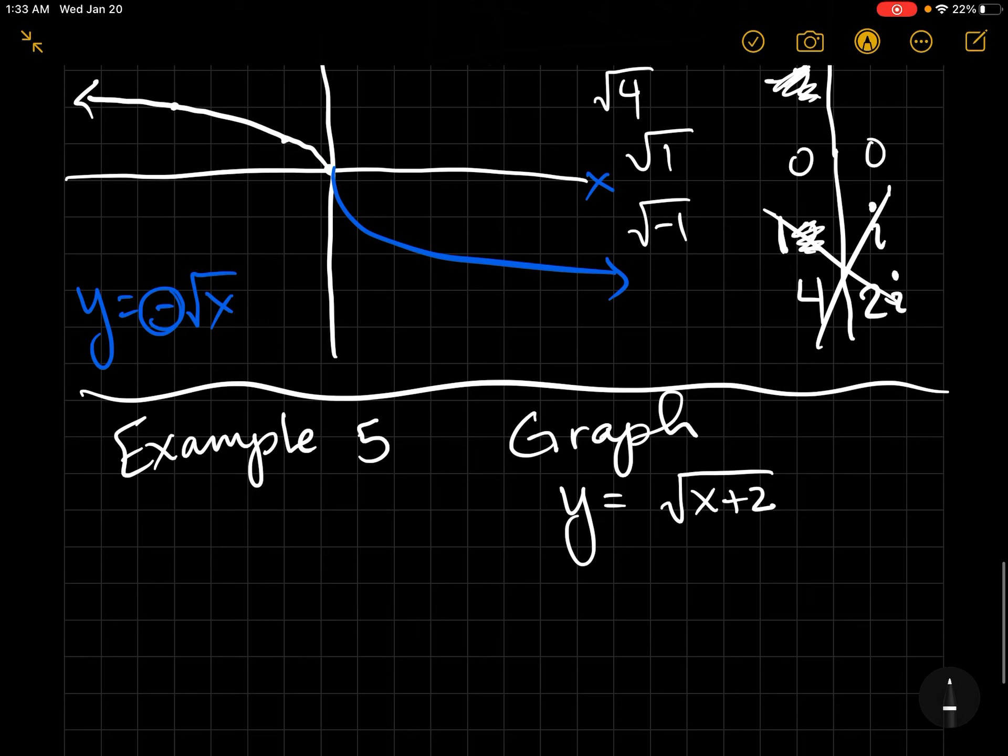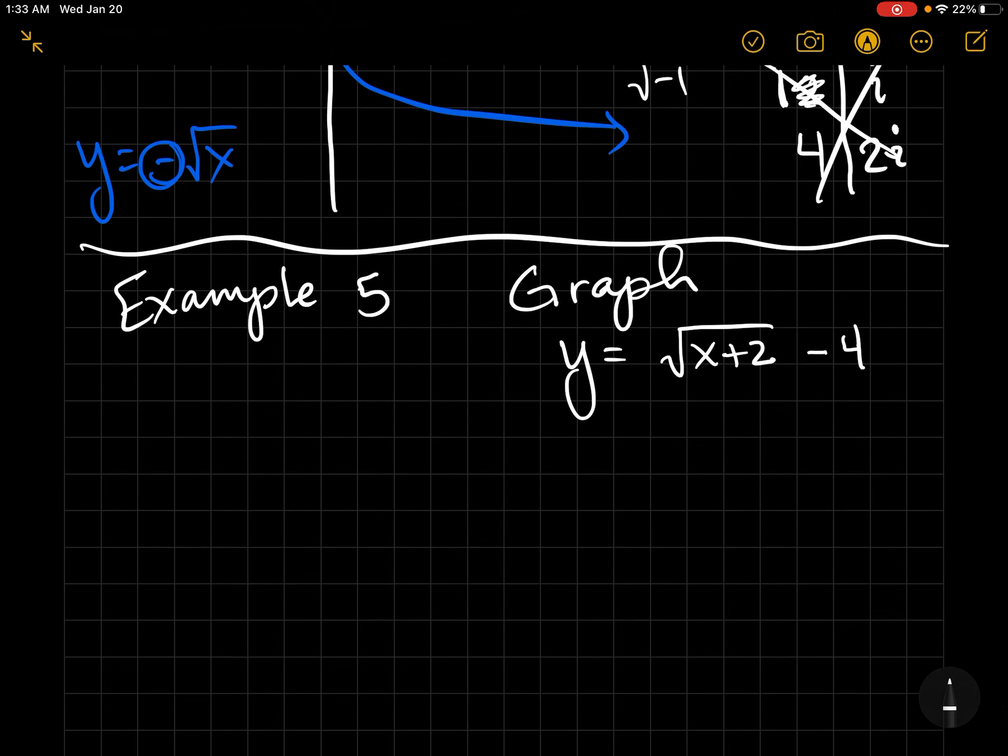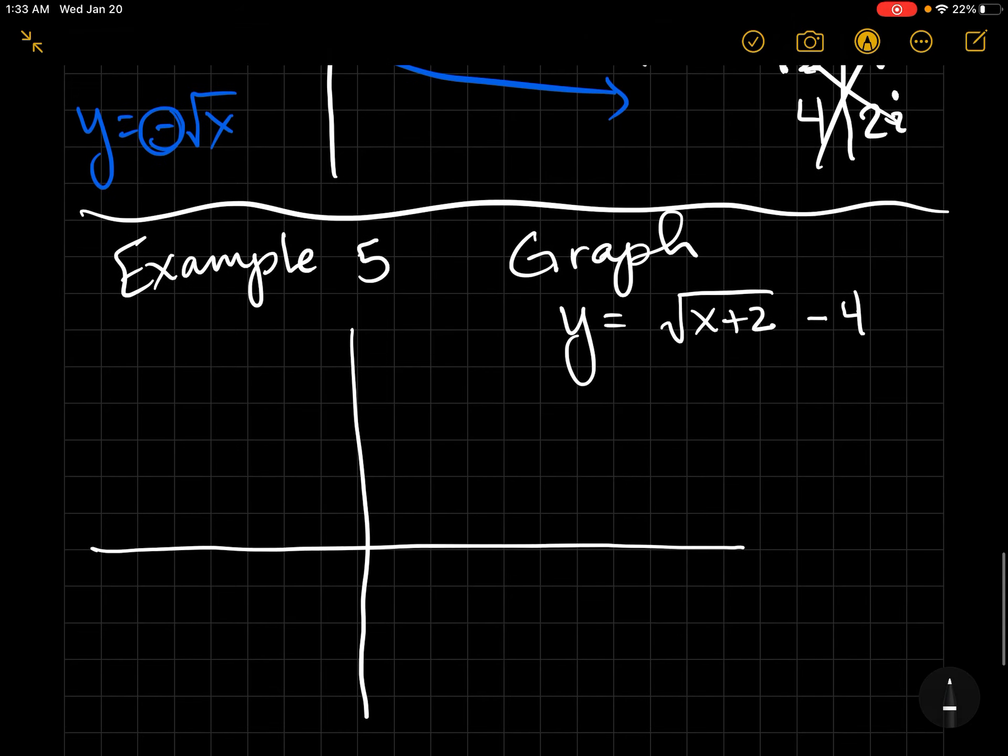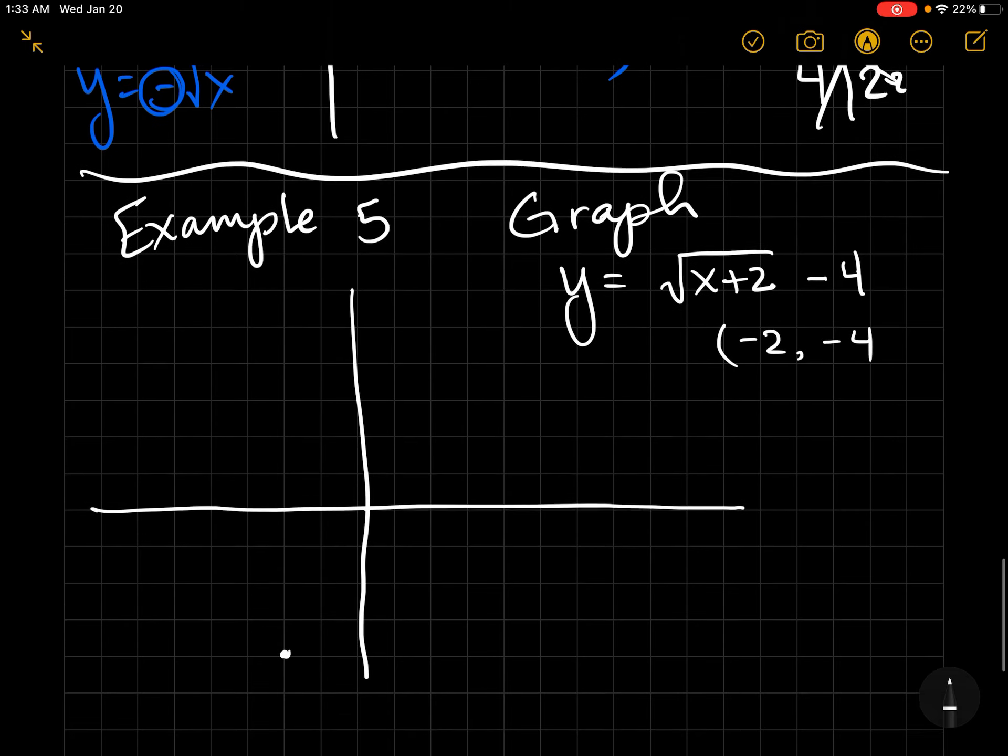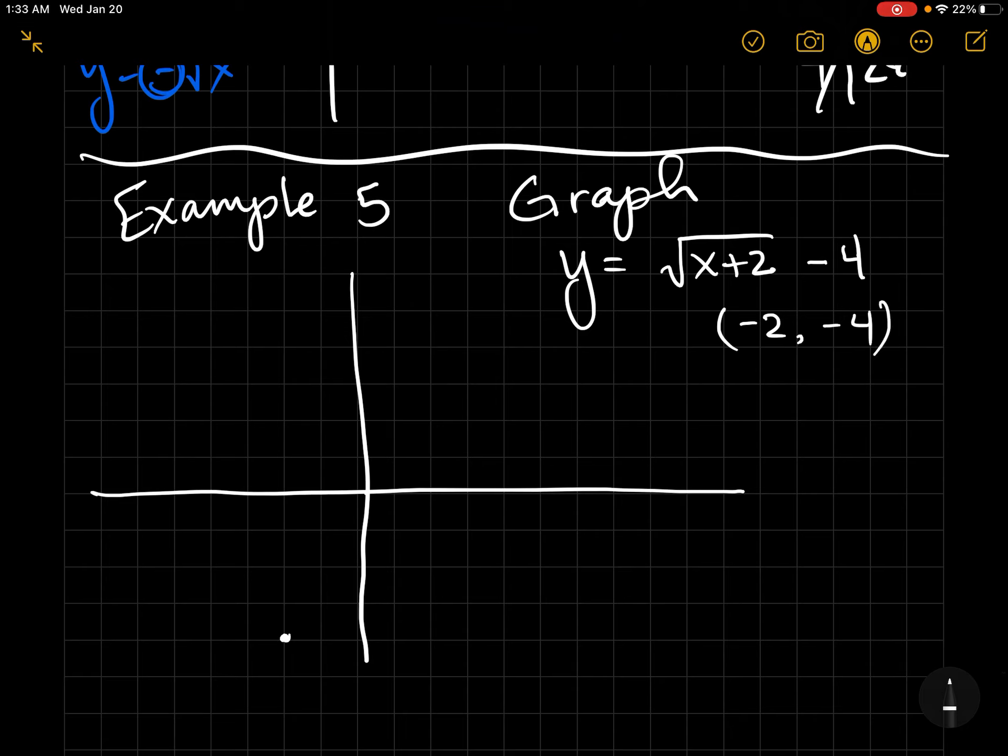Let's look at one more before we conclude. Let's say we wanted to graph y equals the square root of x plus 2 minus 4. The first thing I would like for you to do is figure out the endpoint where this graph is going to start. Negative 2, negative 4, negative 2, negative 4. And now, hopefully, we're very familiar with the points. The square root of 1 is 1. The square root of 4 is 2. The square root of 9 is 3. And this graph just gets easier and easier.